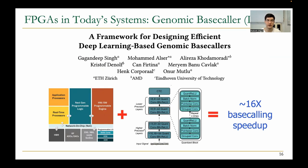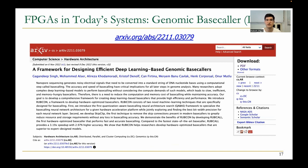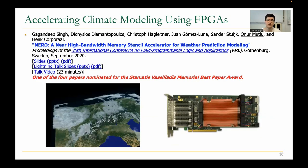We use FPGAs to accelerate other stages of the genomics pipeline. In this work, researchers used a deep learning-based genomic base caller to significantly accelerate the base-calling stage of the genomics pipeline. You can find more details in their preprint on arXiv linked here. FPGAs are not only used in accelerating genome analysis — here's another example work that used FPGAs to accelerate climate modeling, published in FPL 2020.